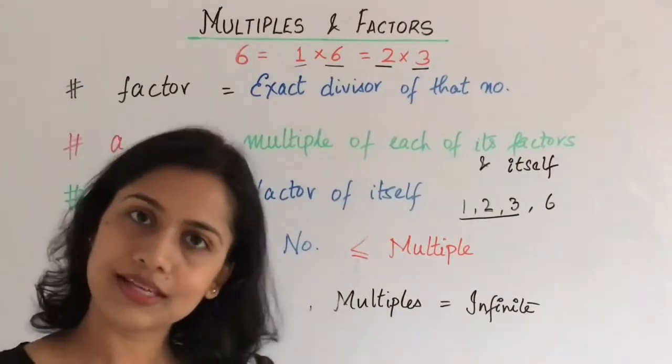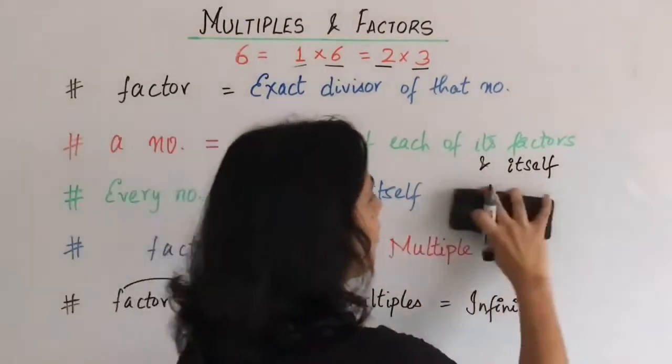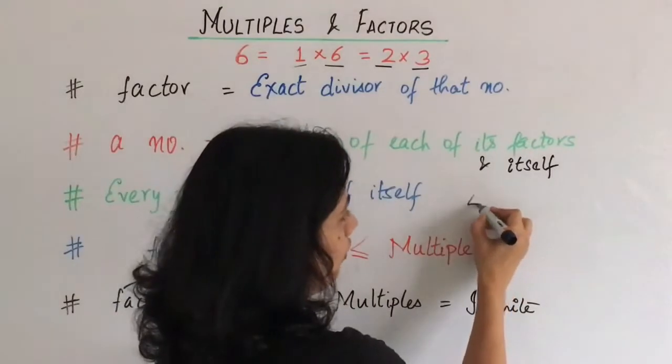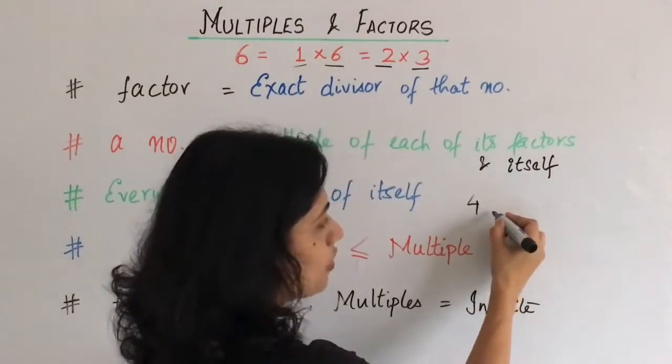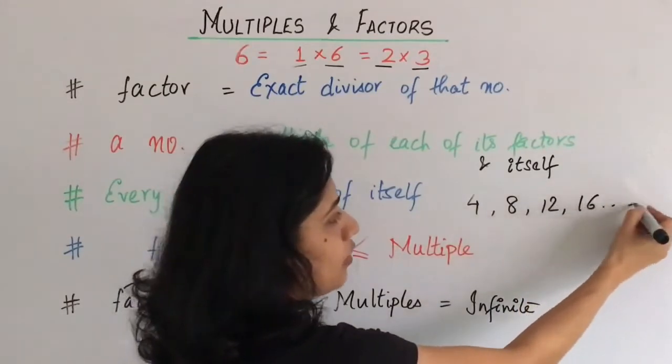Same case, yadhi hum multiples ke case mein lein, to it's going to be just the opposite. Multiples ke case mein kya hota hai? Suppose we say 4. 4 ke multiple kya hongay? 4 1s are 4, 4 2s are 8, 4 3s are 12, 4 4s are 16, and so on.